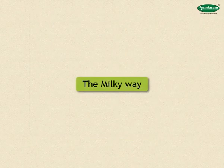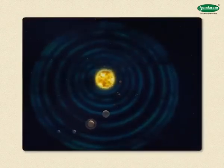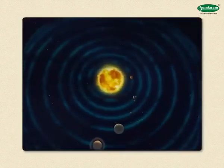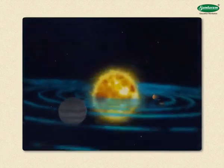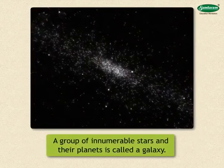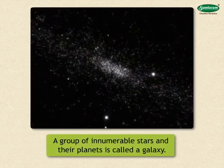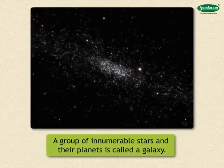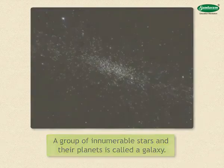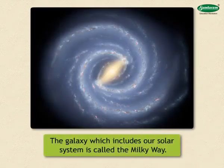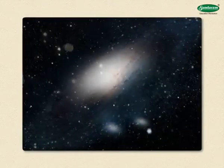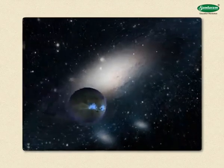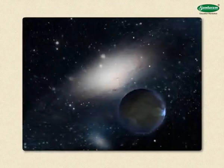The Milky Way. Like our solar system, some other stars in the sky also have their own planetary systems. Such a group of innumerable stars and their planets is called a galaxy. The galaxy which includes our solar system is called the Milky Way. We can see the faint white stretch of the Milky Way on a clear dark night.